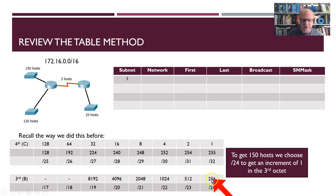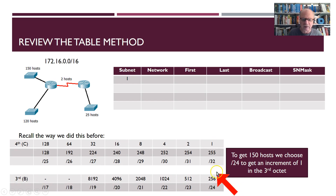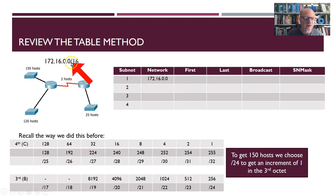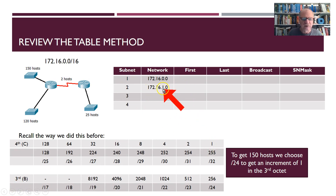So I'll choose the slash 24. If I choose the slash 24, that means I will increment by one in the third octet. I go up to find the increment, and then I go over to find the octet I'm going to increment in. So first I'll fill in my subnet numbers, then begin filling in my networks. The first network is 172.16.0.0, and now I increment by one in the third octet: 172.16.1.0, 2.0, 3.0.